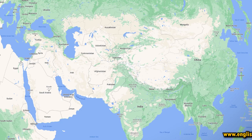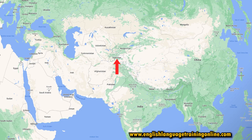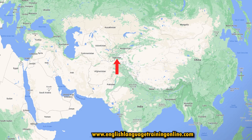In this video we will learn how to pronounce Tajikistan. Tajikistan is a landlocked country on the Asian continent with a population of just over 10 million people in 2022.